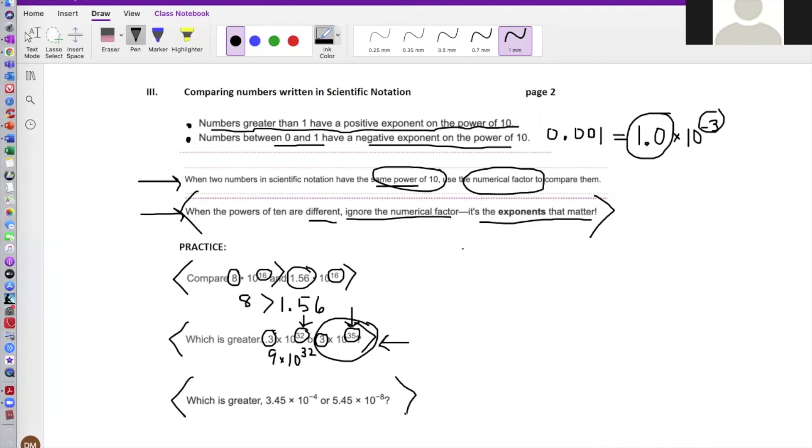Okay, and how about this last example here? Which is greater, 3.45 times 10 to the negative 4th or 5.45 times 10 to the negative 8th? Well, again, because the powers of 10 are different, we ignore the numerical factor. It doesn't matter what that number is right there. It's the exponents that matter. Now, you have to be careful with negative exponents because negative 4 is larger than negative 8. It's not the absolute value of the integer. It's the integer itself. Because we know that negative 4 is greater than negative 8, that means 3.45 times 10 to the negative 4th is going to be greater than the second one, 5.45 times 10 to the negative 8th.